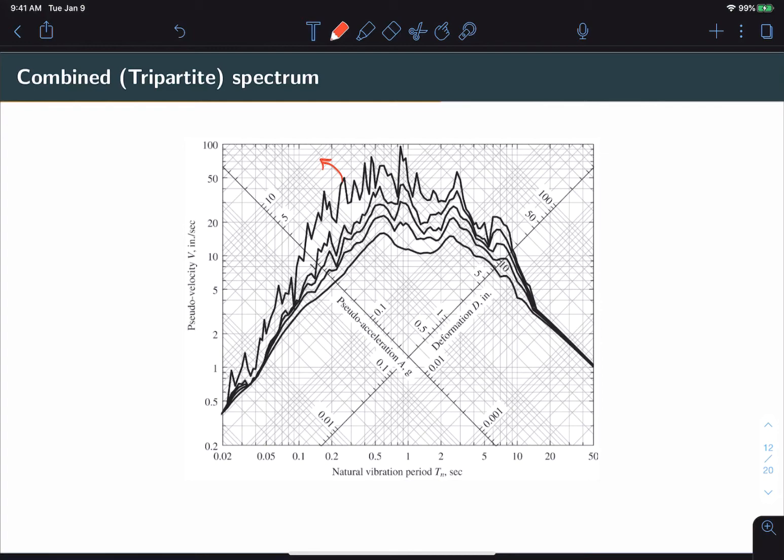The top curve corresponds to no damping. The second curve corresponds to a damping of 2%. The third curve corresponds to a damping of 5%. Then 10%. And then finally, 20%.